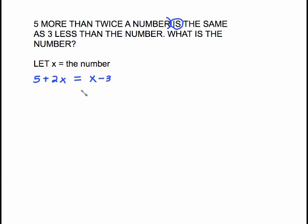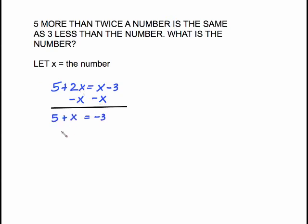Now we're ready to solve. That's just a basic equation. Get your x's on one side and your numbers on the other. If you subtract x from both sides, you will end up with 5 + x equals negative 3 because those cancel.